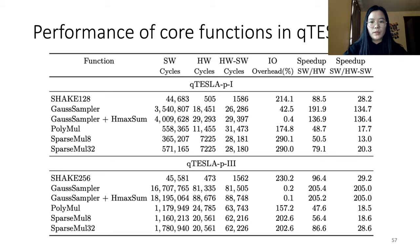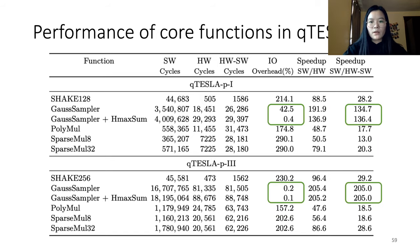Let's take a look at the evaluation results. This table shows the speedups brought by the hardware accelerators for different functions in the lattice-based scheme, namely SHAKE, Gaussian sampler, polynomial multiplication, and sparse polynomial multiplication. Very good speedups are achieved for all functions. The speedup for the Gaussian sampler is especially high compared to the other functions. This is partly because the hardware accelerator itself is very effective, and also because the data communication overhead between software and hardware is perfectly overlapped with the computation within the sampler, making the communication overhead almost negligible.